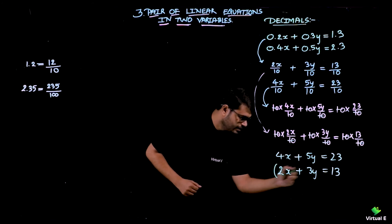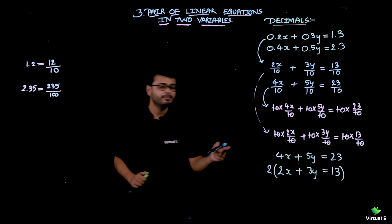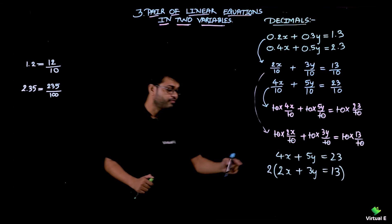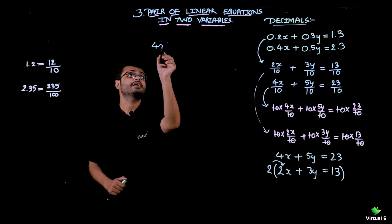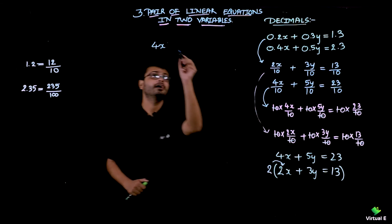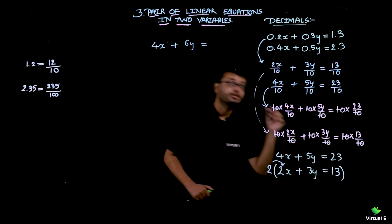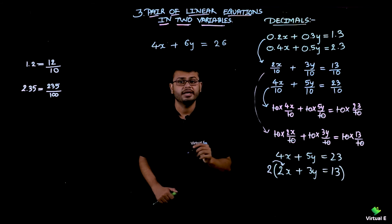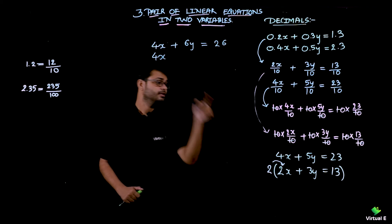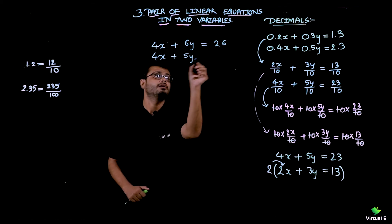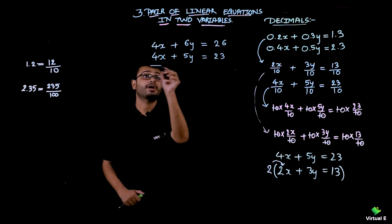I am multiplying the second equation by 2 — remember, 2 must be multiplied with each and every term. So 2 times 2x gives 4x, 2 times 3y gives 6y, and 2 times 13 gives 26. Now let me rewrite the first equation: 4x plus 5y equals 23. I am going to subtract these two equations.